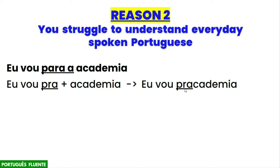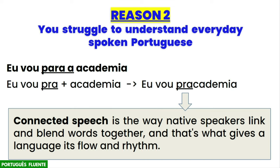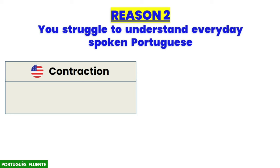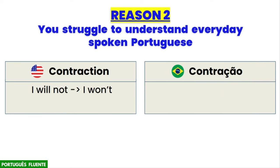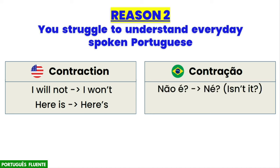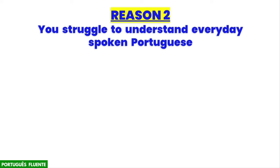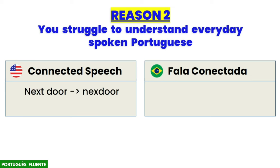Connected speech is the way native speakers link and blend words together, and that's what gives a language its flow and rhythm. In English, contractions include 'I will not' becoming 'I won't' and 'here is' becoming 'here's'.